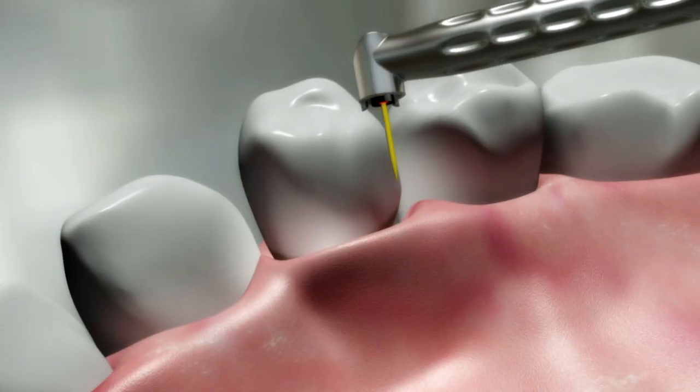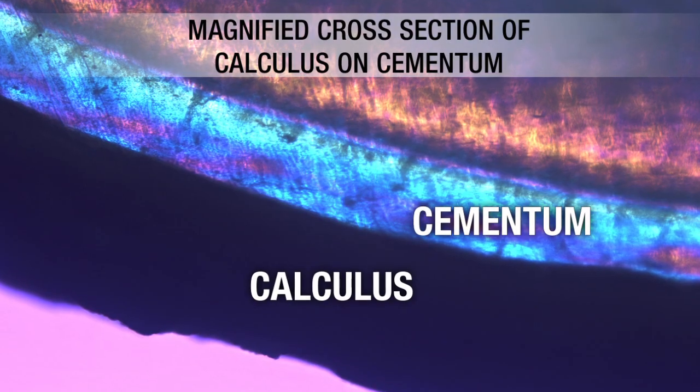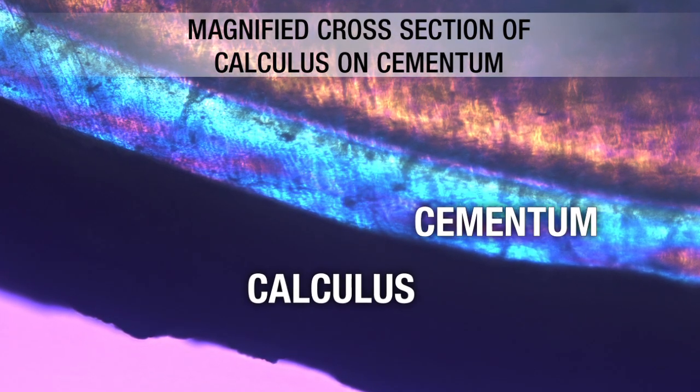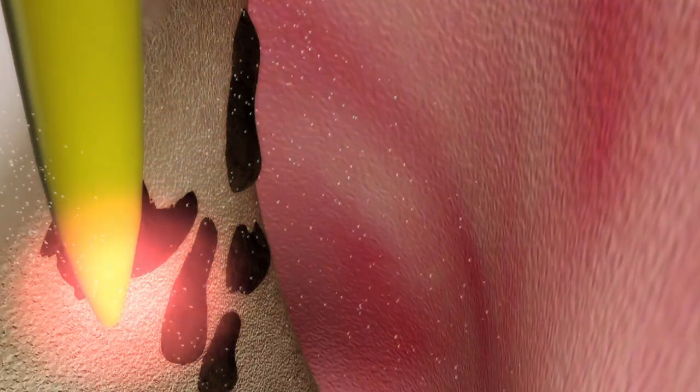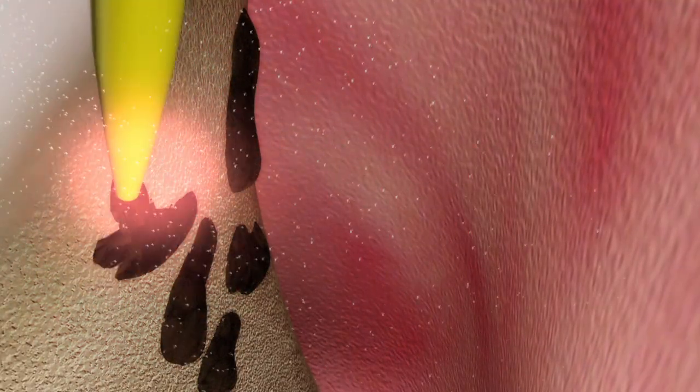Next, we insert a specialized Erbium YAG handpiece tip with water spray into the pocket to remove calculus at subablative laser energy. The special tip utilizes photon-induced photoacoustic streaming, or PIPS, to remove the calculus and disrupt the destructive biofilm on the root surface.